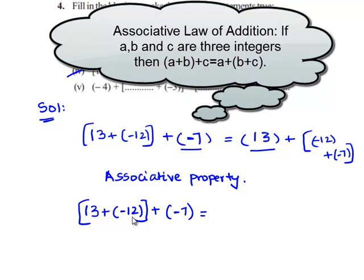13 plus minus 12 gives 1 and we are left with minus 7. Therefore, 1 minus 7 gives minus 6.